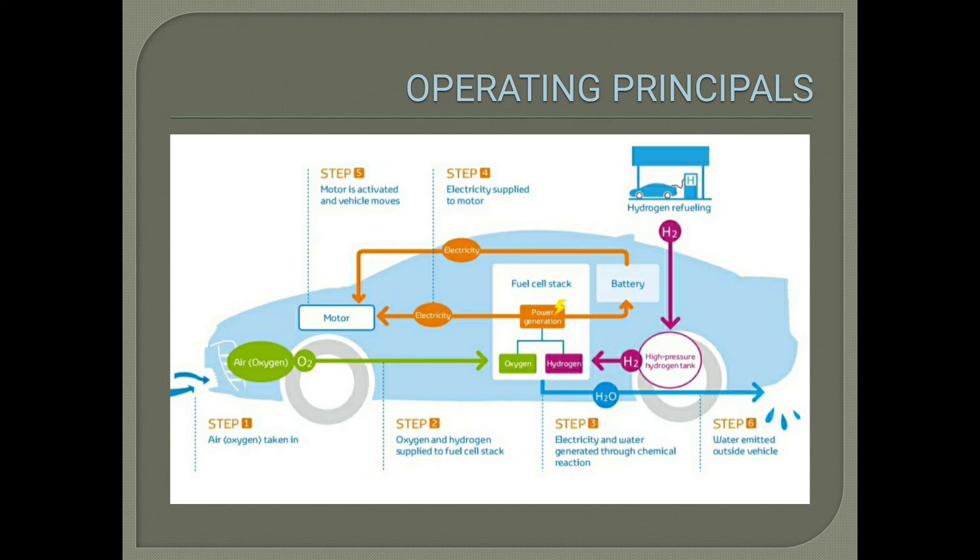The operating principle is, Hydrogen can be filled through the fuel station, in hydrogen tanks. Oxygen can be taken from air to the fuel cell stack and combines with hydrogen. When oxygen combines with hydrogen, in the fuel cell stack, electricity and water is generated through chemical reaction.